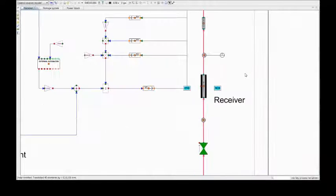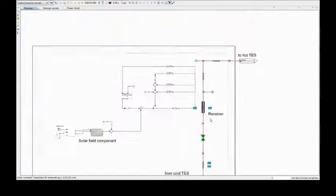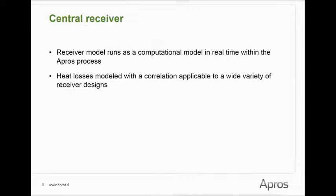This component is the receiver model. It's a part of the APROS fluid system. As the receiver model is a part of the APROS process network, everything related to the model will be solved in real time together with the APROS model. Heat losses are modeled with a correlation applicable to a wide range of receiver designs.